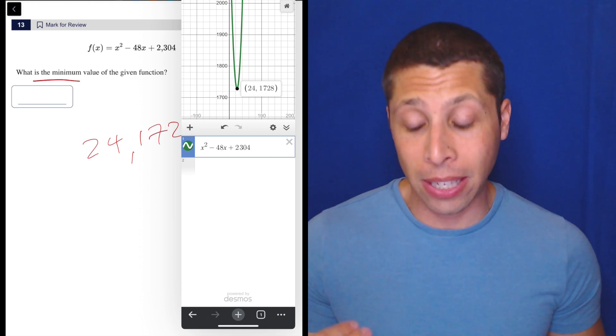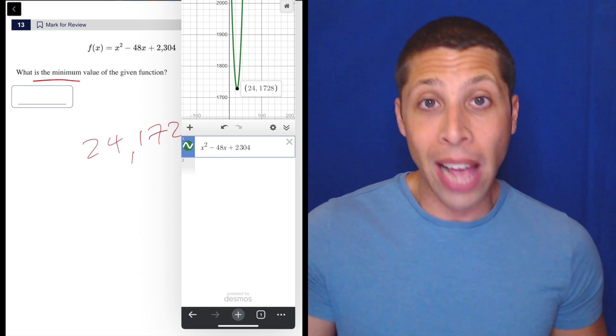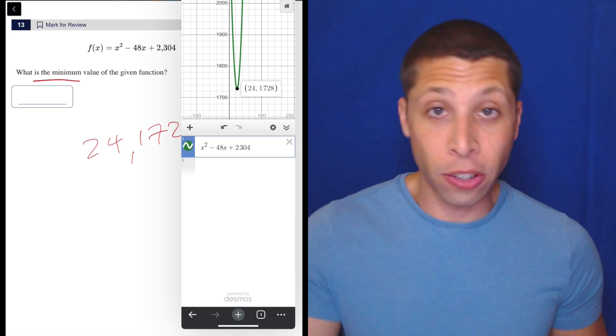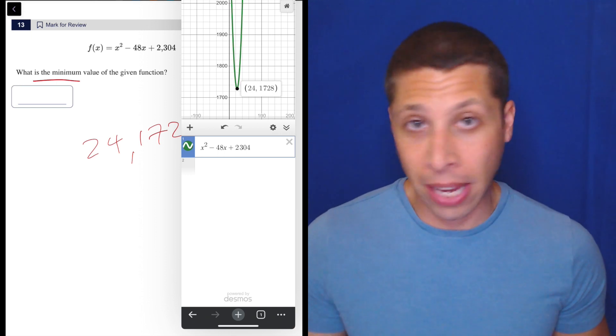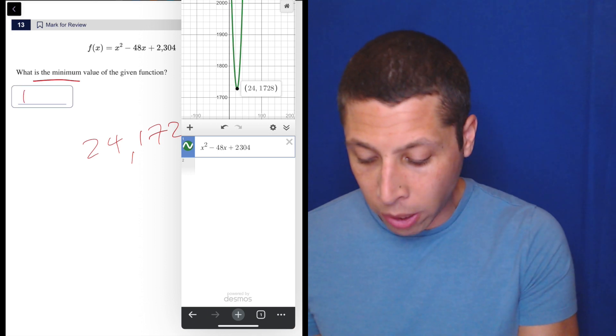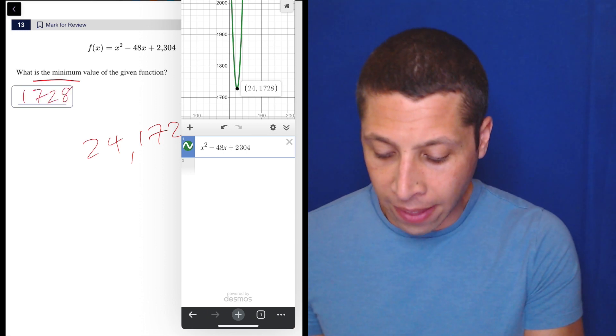If they wanted the x, they would have said something like, for what value of x does this function get to its minimum? So they want the y here. So 1728 is the answer, and that's that.